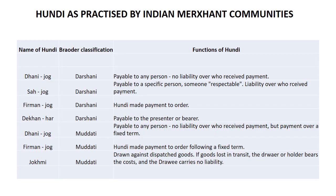As practiced by Indian merchant communities, Hundi had different types. The broader classification includes Dhanijog and Darshani. Darshani Hundi was payable to any person with no liability over who received the payment. 'Darshani' comes from the word 'Dekhna,' meaning on sight — whoever presents the Hundi gets paid.